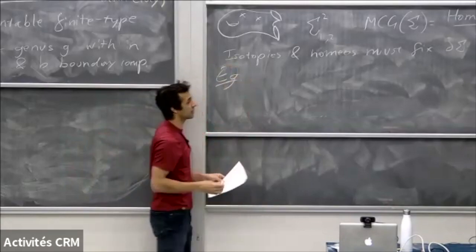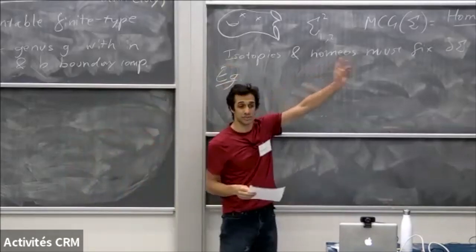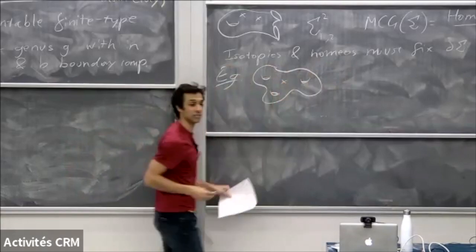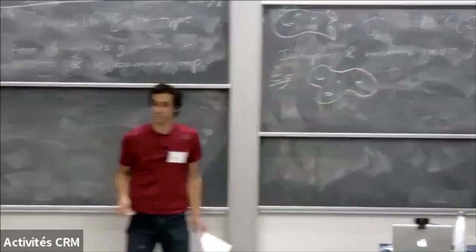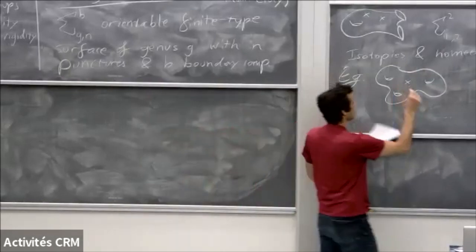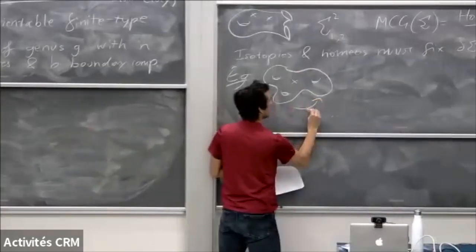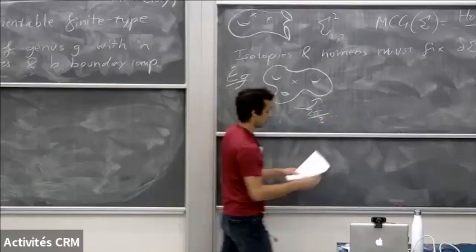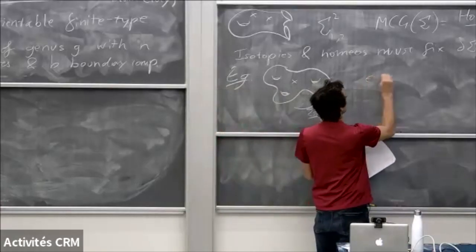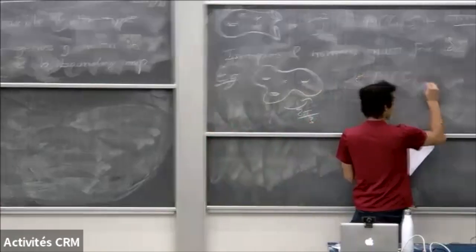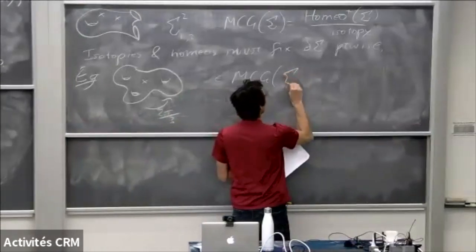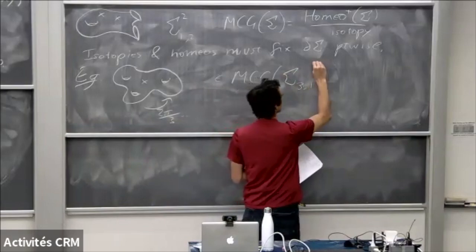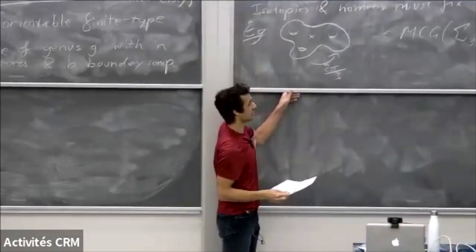So let's have a look at some elements of the mapping class group — these are called mapping classes. You could take a genus three surface with one puncture and you can rotate 2π/3. So this is an element in the mapping class group of sigma, genus three, one puncture.